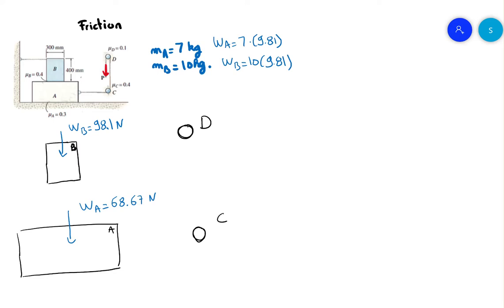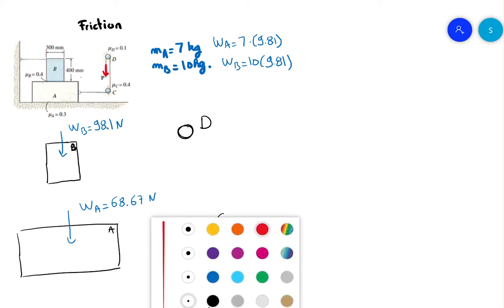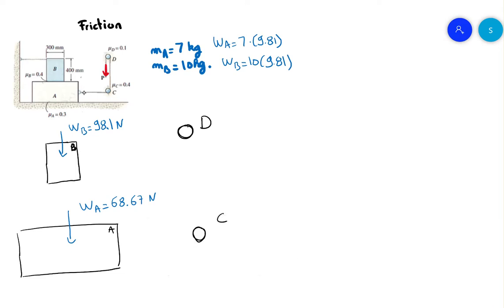The other forces we don't know, so let me write them in red. On block A, the force P is going down. On this side we have a force PD, and on the other side PD as well — it's not the same because there's friction in the pulley. On the right, the force PC is different too. The coefficient of friction: mu_D equals 0.1, and mu_C equals 0.4.